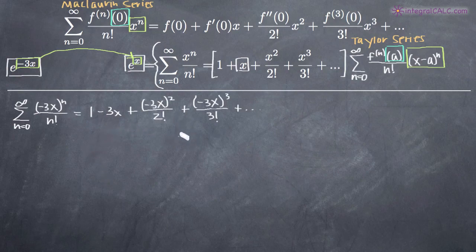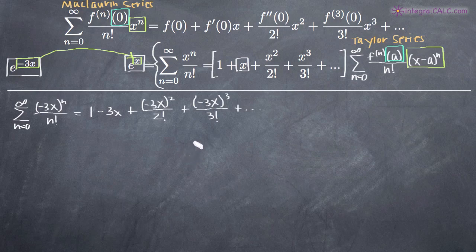If you wanted to, you could simplify these somewhat. We could expand negative 3x squared, we would get 9x squared. Negative 3x cubed would give us negative 27x cubed. But it's probably almost cleaner to leave it this way because we've got our consistent negative 3x to the n. So we can just go ahead and leave it just like this. This is our Maclaurin series expansion of e to the negative 3x.